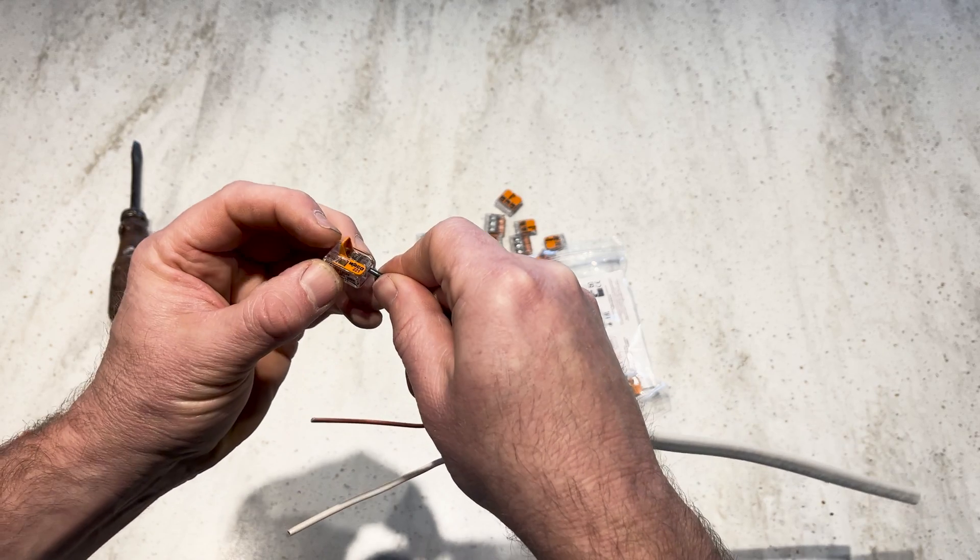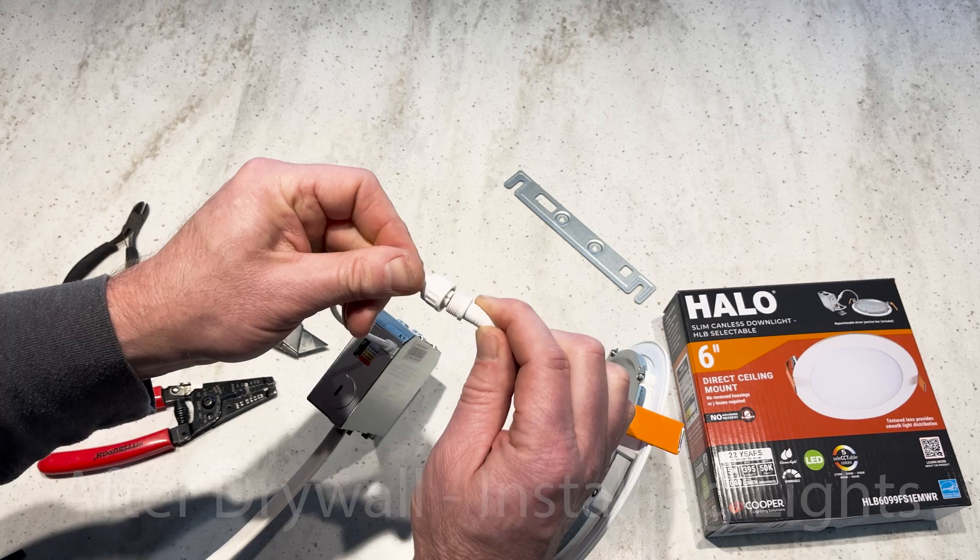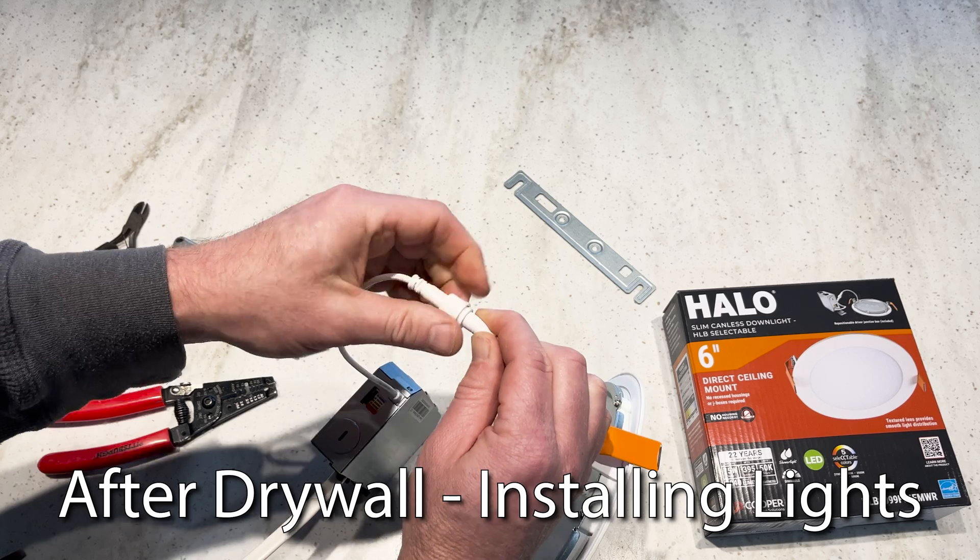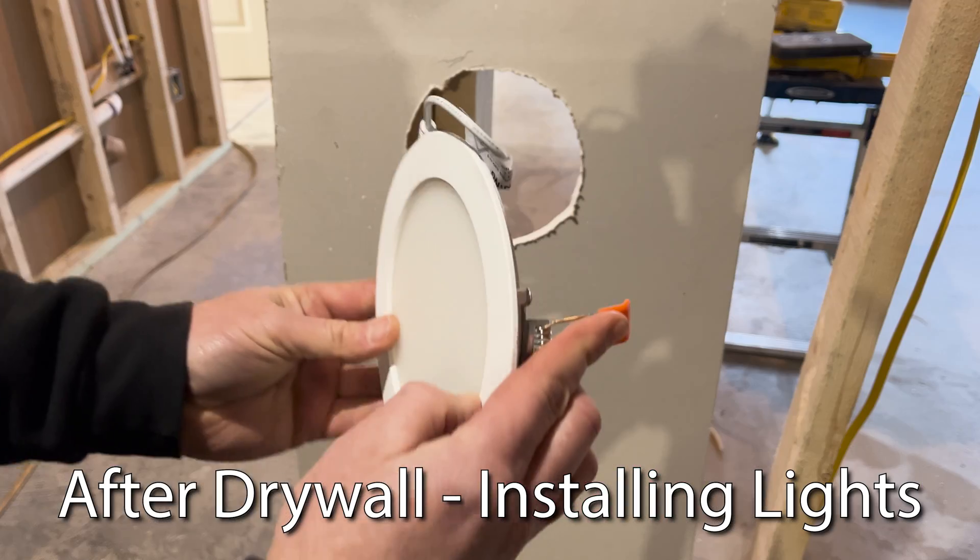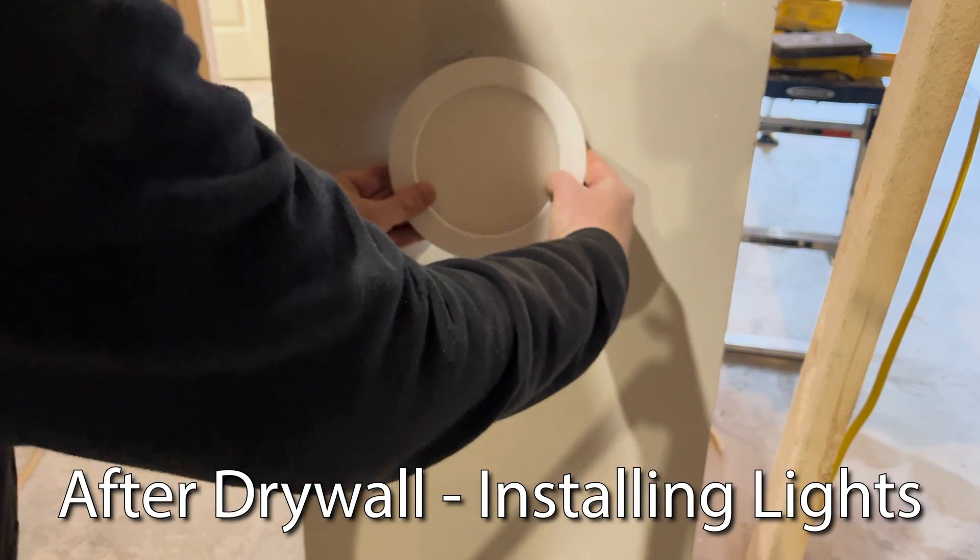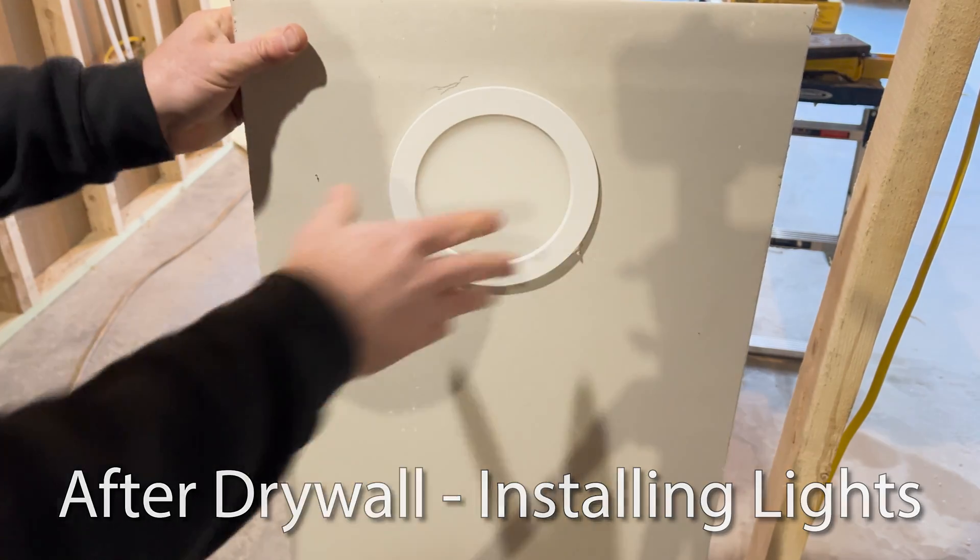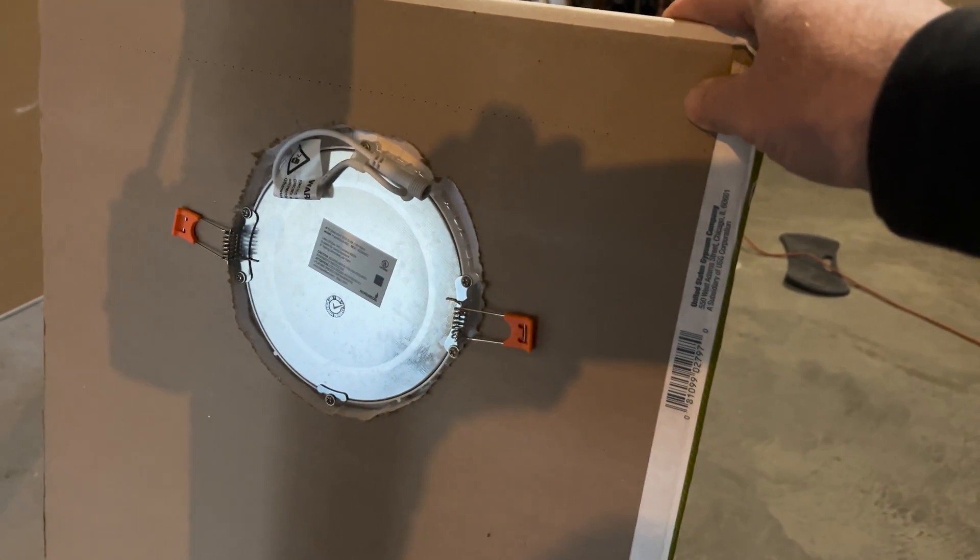After all the light connections are made, you're ready for drywall. And after drywall's up, you connect each junction box to its light like this. Then hold the spring tabs on the light back and raise the light into the hole. Those springs will pull the light flush into position. So easy.